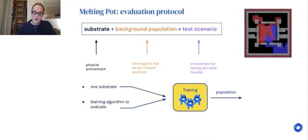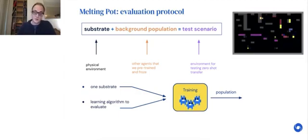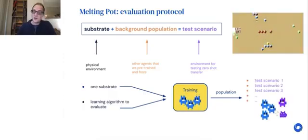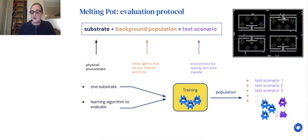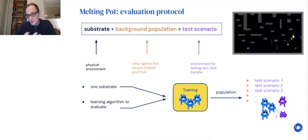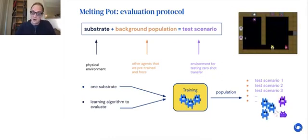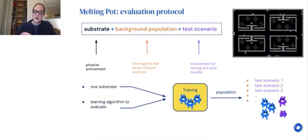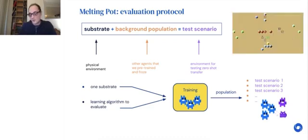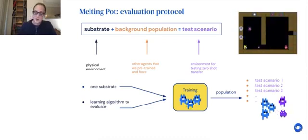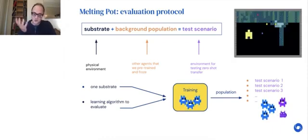At test time, you sample players from the focal population and mix them with the background population in particular proportions. Each test scenario will have different proportions. Some test scenarios are what we call resident mode scenarios where they're mostly players from the focal population joined by a few players from the background population. Other scenarios are visitor mode scenarios where they're mostly players from the background population being visited by a few players from the focal population.